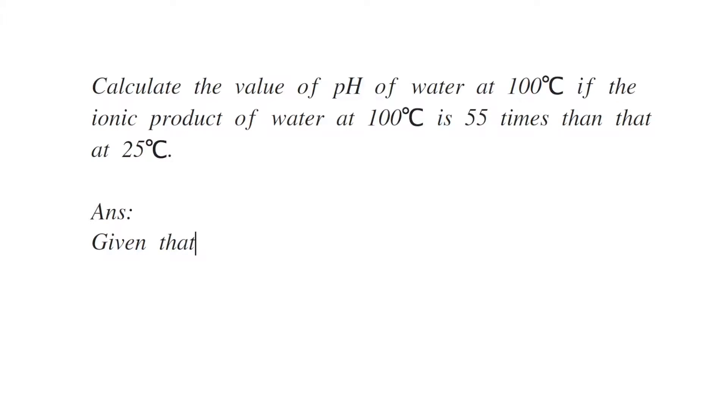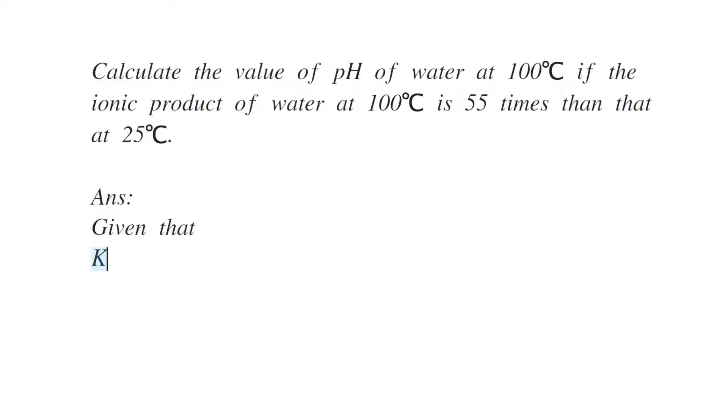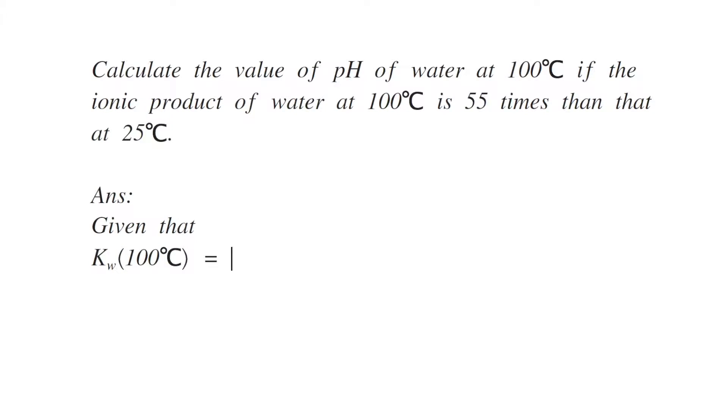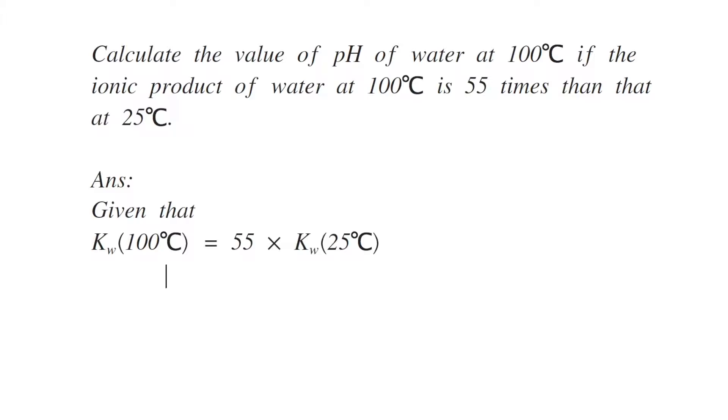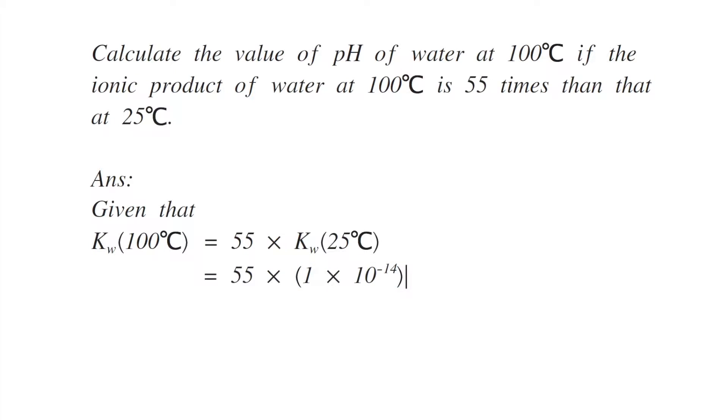As we know that the ionic product of water at 25 degrees Celsius is 1 × 10^-14, it is the concentration product of ions H+ and OH- ions. So the Kw at 100 degrees Celsius will be 55 times Kw of 25 degrees Celsius, so it becomes 55 × 1 × 10^-14 moles.